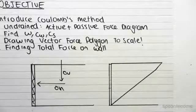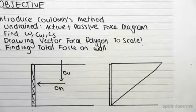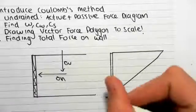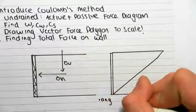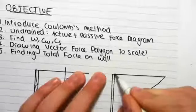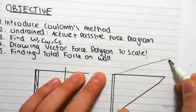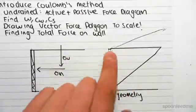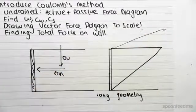The benefit of Coulomb's method compared to Rankine's method is that we can deal with any geometry. So say for example we had more of a slope like this on our wall, which went up. We'd be able to consider that slope, where in Rankine's method we wouldn't be able to.